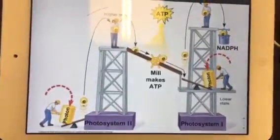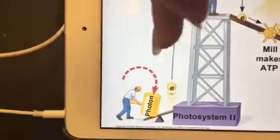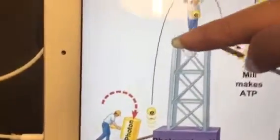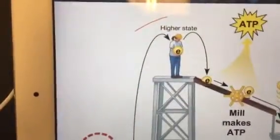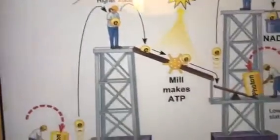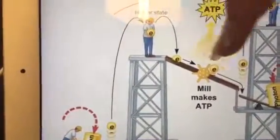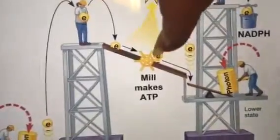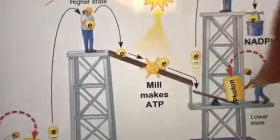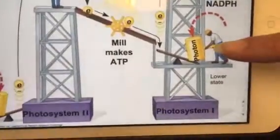Basically, a photon comes in and excites the electrons, so the electron goes up in energy and travels to Photosystem II, which is P680. From P680, it goes into a rotor, which transports the electron over to more photon energy.